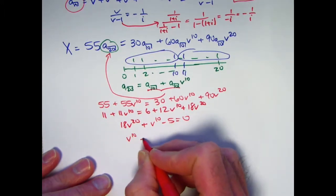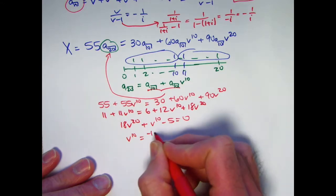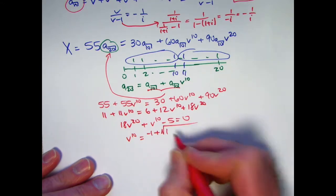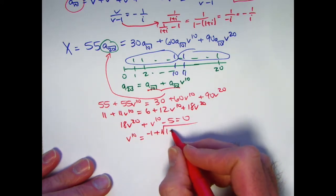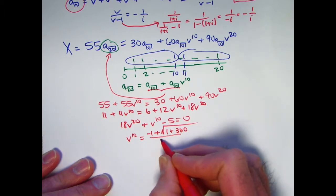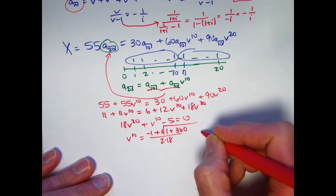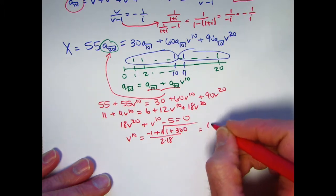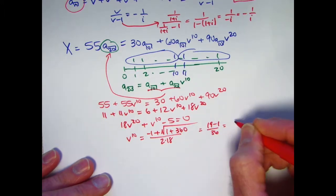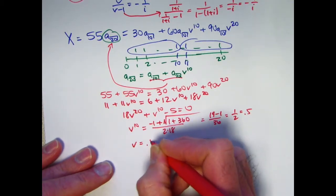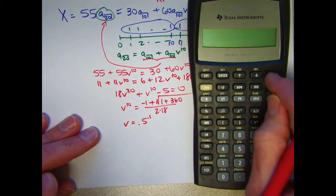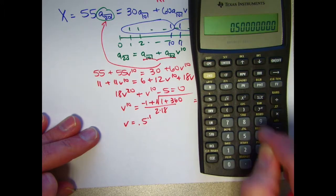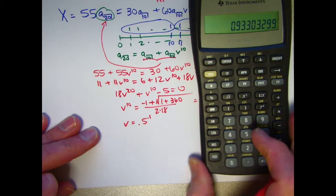Now I can use the quadratic formula to solve for v^10. The plus square root is going to be good enough. Let's see. 4 times 18 times -5. That is going to be positive 360 over 2 times 18. We're going to get the square root of 361 is 19. 19 minus 1 over 36. This is 1/2, 0.5. So v is going to be 0.5 to the 0.1 power. Raising both sides to the 1 tenth power. 0.5 to the 0.1 power is about 0.933.